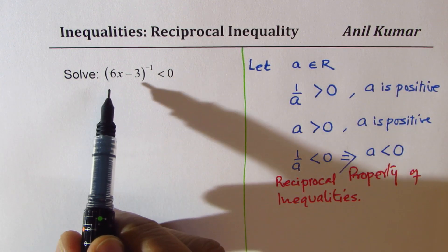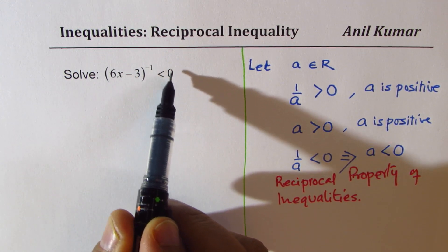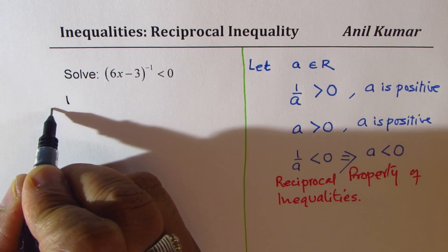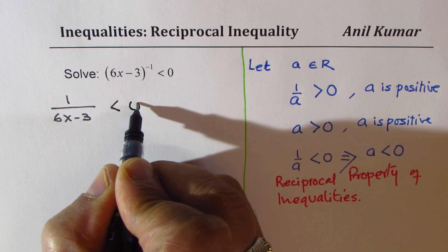So the question here is reciprocal of 6x minus 3 is less than 0. Basically you could write like this: 1 over 6x minus 3 is less than 0.